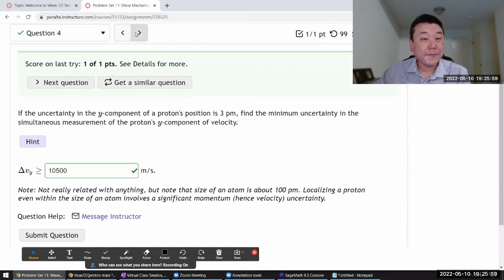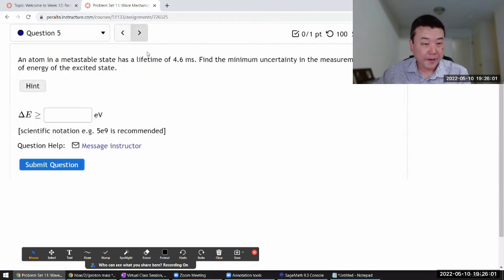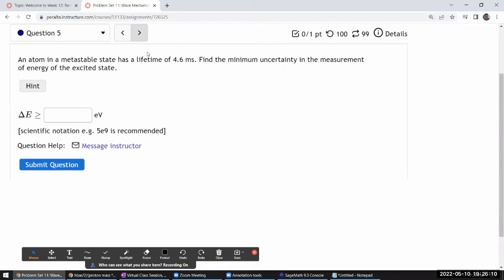Question 5. Okay, it says an atom in a metastable state has some lifetime, find the minimum uncertainty in the measurement of energy of the excited state. And this actually relates to what I was saying earlier about unstable particles and uncertainty in mass. So this is a different uncertainty principle. It should be of this form. And I think I mentioned this in lecture, that this uncertainty in energy and lifetime is greater than or equal to h bar over two.